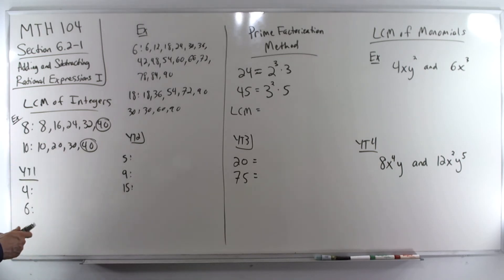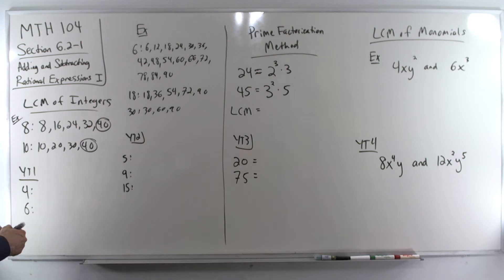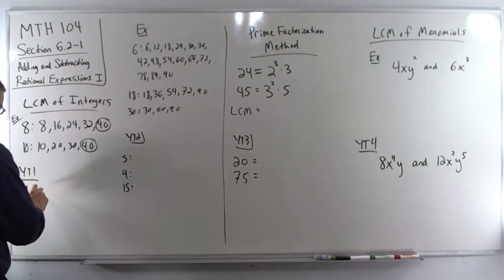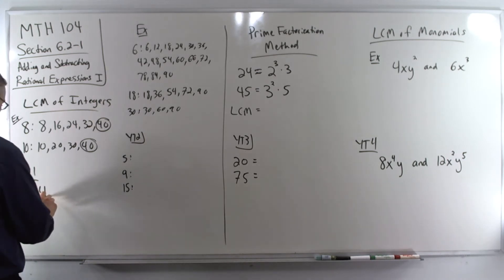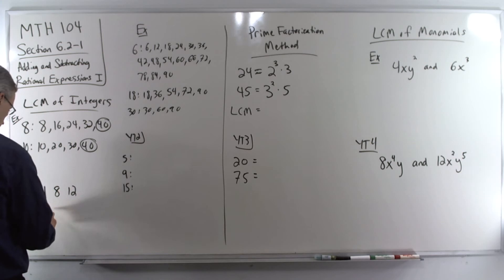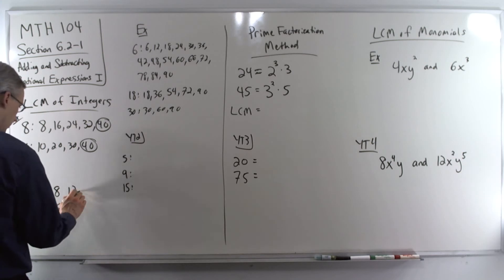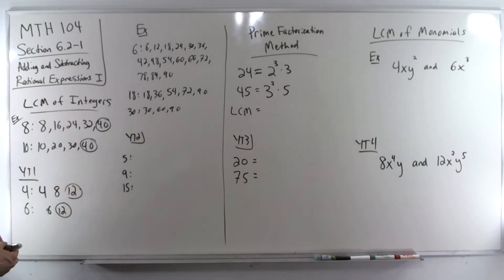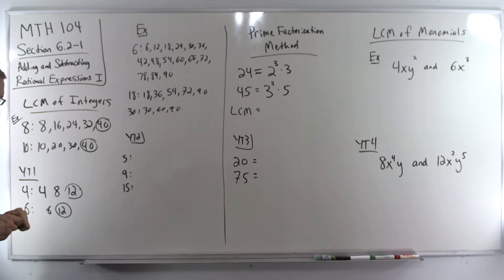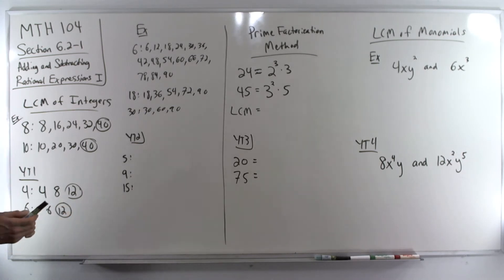Your turn, number one. Find the LCM of 4 and 6. List out the multiples. We have 4, 8, 12 for the multiples of 4, and 6 and 12 for the multiples of 6. First match is 12. So the LCM of 4 and 6 is 12.